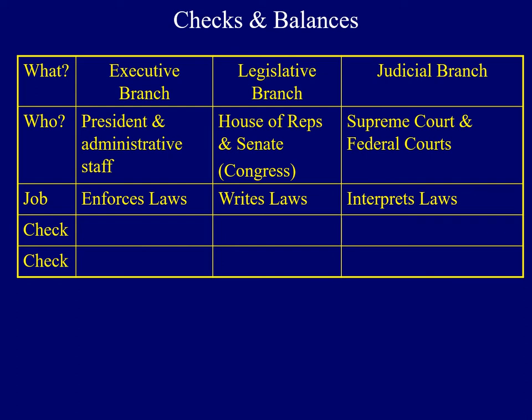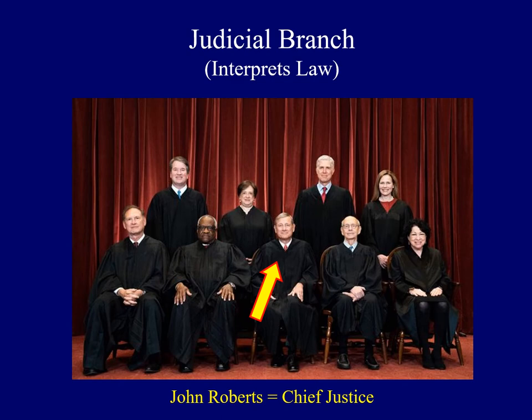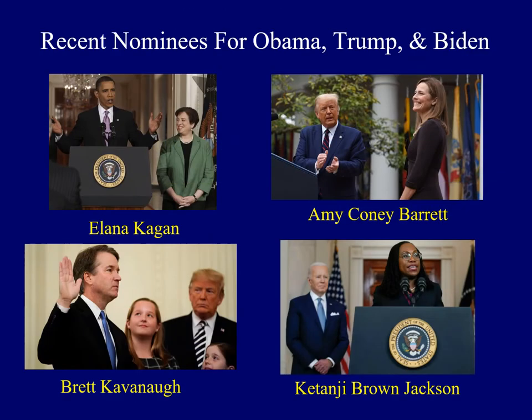Our judiciary has the job of interpreting laws to let us know what they actually mean. The nine members of the United States Supreme Court include the Chief Justice, John Roberts. One way that the executive branch can check the actions of the judiciary is that if there's a vacancy on one of the courts, the president has the sole power to nominate someone to fill that vacancy. Recent nominees include those from Presidents Obama, Trump, and Biden.